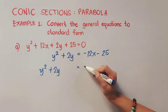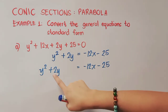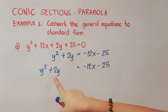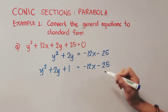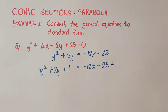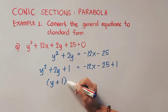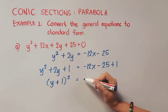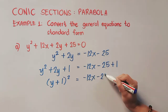Now on the left side, we have to complete the square. We have to focus on our middle term. So 2 divided by 2 is 1, and 1 squared is positive 1. Remember that you also have to place it on the right side to maintain the equality. We can now factor this out. This is (y + 1)² equals negative 12x, and then negative 25 plus 1 is negative 24.